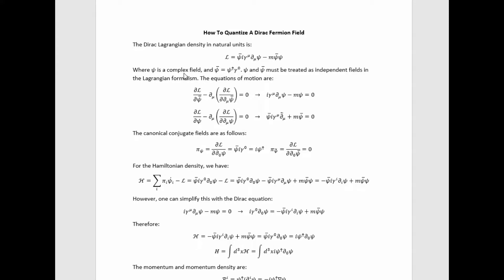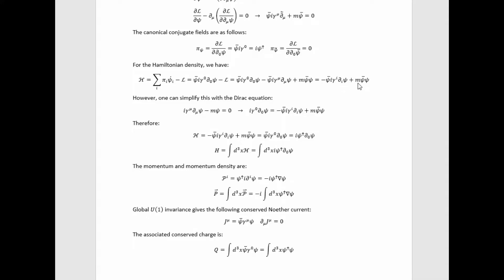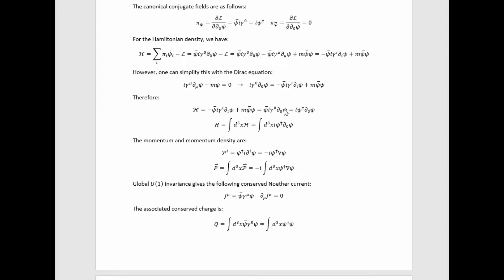The Dirac Lagrangian density in natural units is given, where psi is a complex field and psi-bar is given by a formula in terms of the Hermitian conjugate of psi. Psi and psi-bar must therefore be treated as independent fields in the Lagrangian formalism. The equations of motion are given accordingly. The canonical conjugate fields are given: the conjugate to psi-bar is zero, and the conjugate to psi is i·psi-dagger. We arrive at a value for the Hamiltonian density, and the Dirac equation allows us to rewrite it more simply.